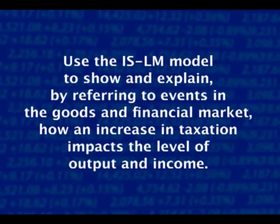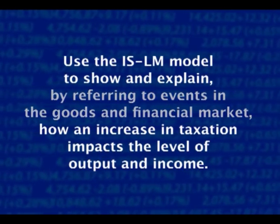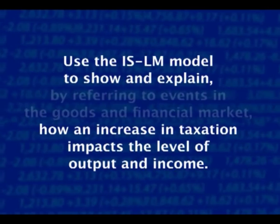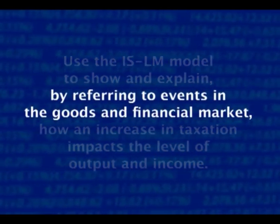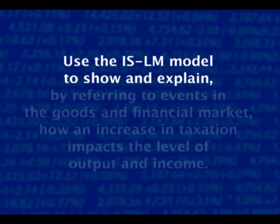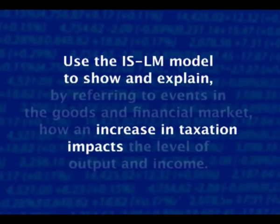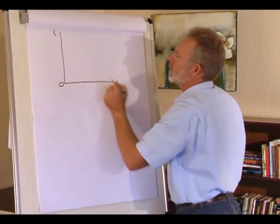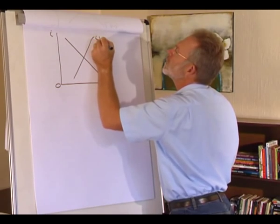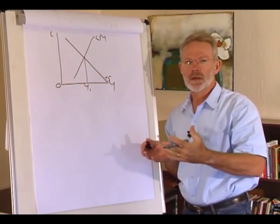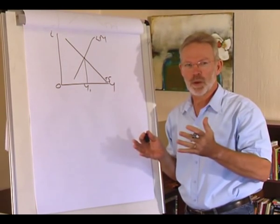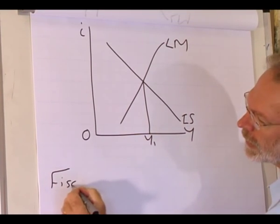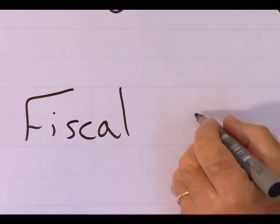Let's rephrase the question slightly: use the IS-LM model to show and explain how an increase in taxation impacts the level of output and income, by referring to events in the goods and financial markets. We must use the IS-LM model to show and explain the impact of an increase in taxation. Taxes form part of fiscal policy, and since we have an increase in taxes, this is fiscal contraction.